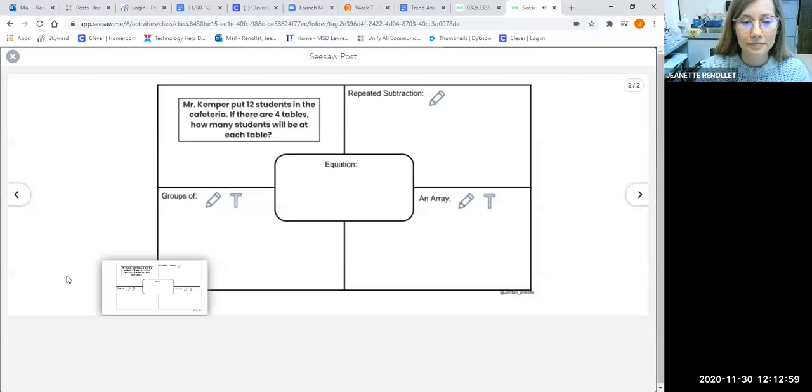The teacher will solve this problem as an example of different ways we can show division. Here's the problem: Mr. Kemper put 12 students in the cafeteria. If there are four tables, how many students will be at each table? Watch as your teacher models how to solve it in three ways and how to write the division equation in the center.